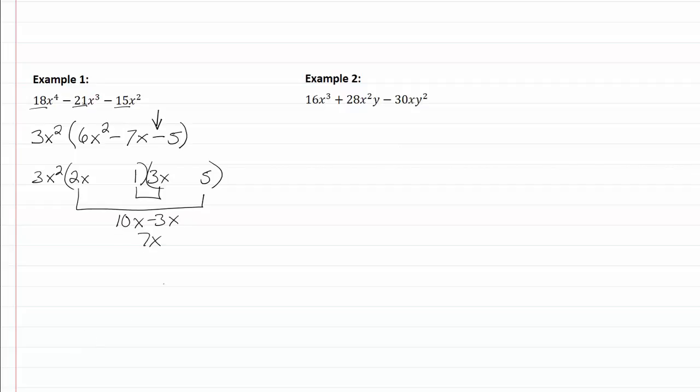I need a negative 7, so in order to do that I need to change my signs here. Now that I've changed my signs, my negative is going to come over here in the last box.